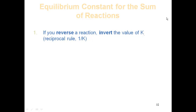Rule one: if I have a reaction going to products with K equal to products over reactants, and I physically flip it so that products now go to reactants, the K expression now has reactants in the numerator and products in the denominator. That second equilibrium's K is therefore 1 over K — the reciprocal. This is known as the reciprocal rule.